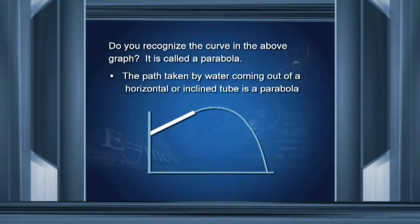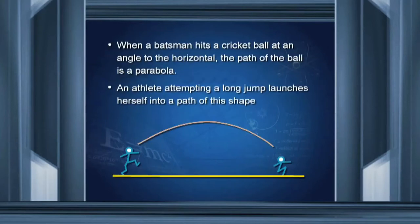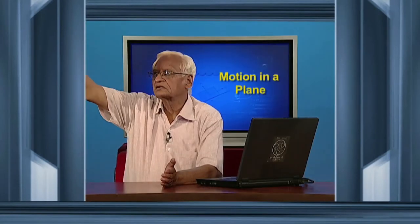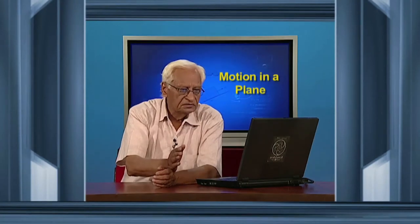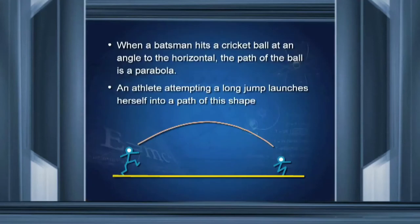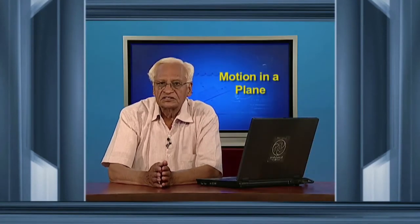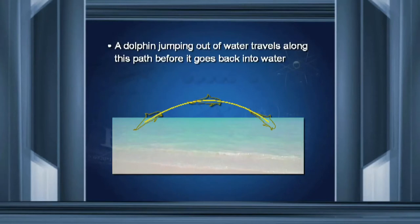Let me give you a few examples of this parabolic curve. Water coming out of a tube describes a parabola. When a batsman hits a cricket ball, the ball has a trajectory which is parabolic. An athlete attempting a long jump launches herself into a path of this shape. If you have been to a seaside, you must have seen dolphins jumping out of water and going back — that path followed by the dolphin is also a parabola.